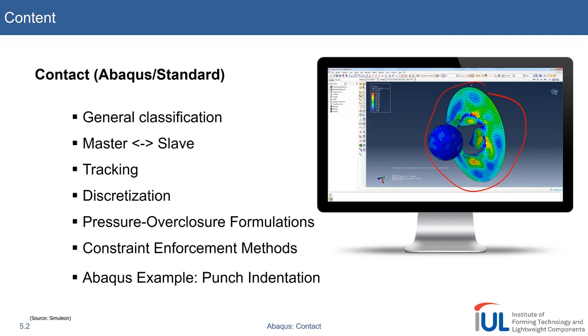And the constraint enforcement methods, so to say, the police officer within the contact algorithm who really makes sure that everything you've defined is followed. There are different approaches there and we'll take a look at this. We will explicitly do an indentation example of a simple punch. I'll show you some of the basic setups and then you can continue doing things on your own.